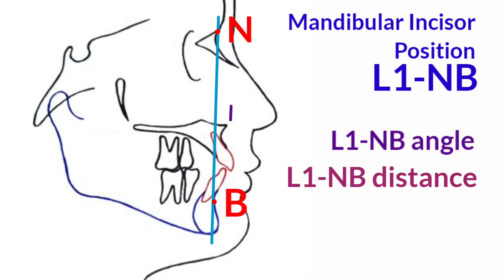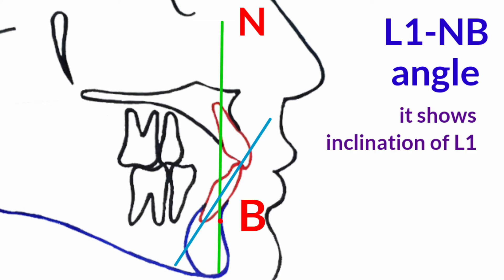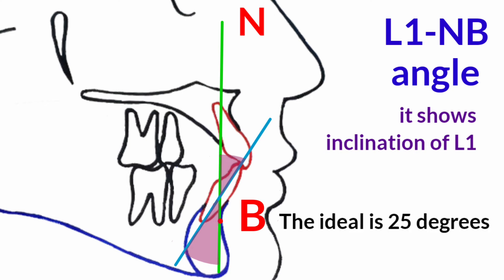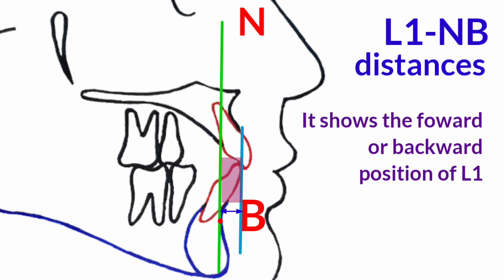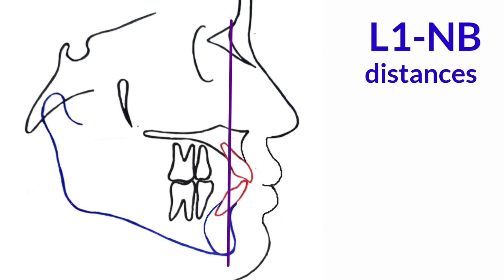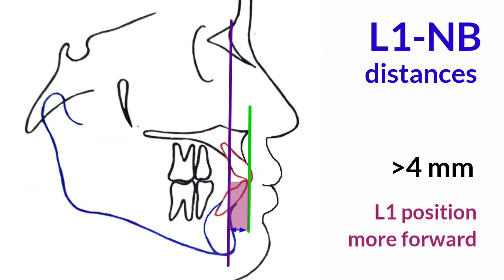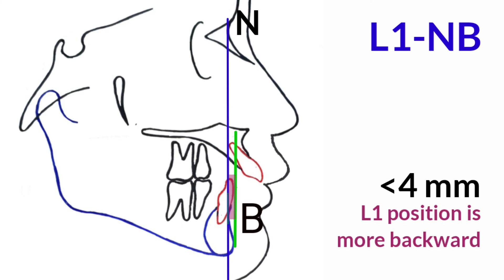Lower incisors to the NB line angle is formed by the intersection of the long axis of the lower central incisors and the NB line; it shows the axial inclination of lower incisors, with an ideal of 25 degrees. Lower incisors to the NB line distance is the distance from the most labial surface of the lower incisors to the NB line, showing the forward or backward positioning; the ideal is 4 mm. Greater than 25 degrees means lower incisor inclination is too labial. Greater than 4 mm means the lower incisors are positioned more forward. Less than 25 degrees means lower incisor inclination is too lingual. Less than 4 mm means the lower incisors are positioned more backward.